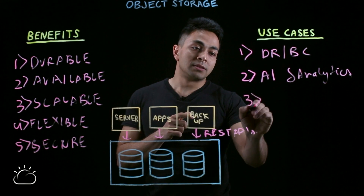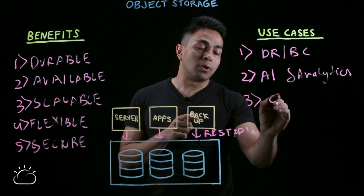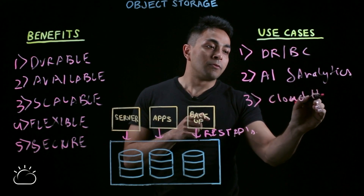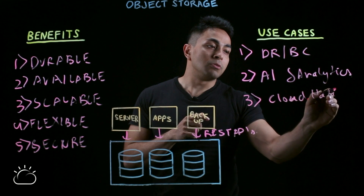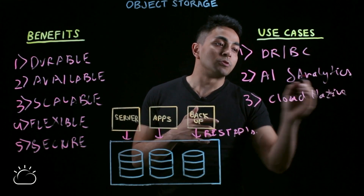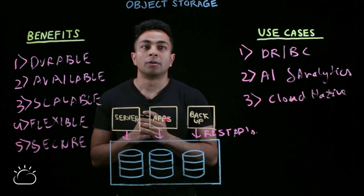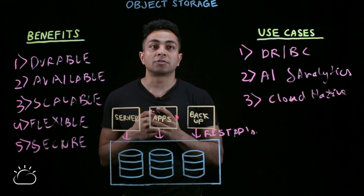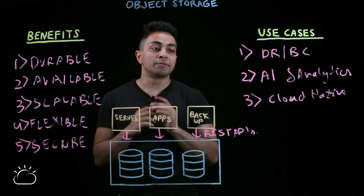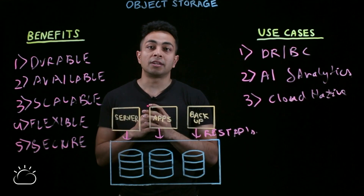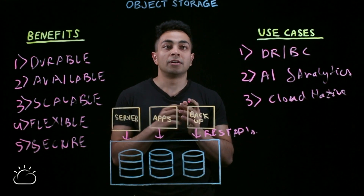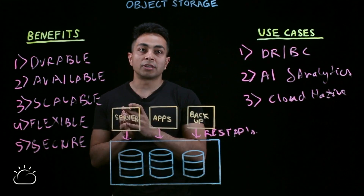The third use case is cloud native. For example, you may be trying to build a new startup that wants to build an iOS or Android app. Object store gives you the flexibility to easily store the data requirements that you have, giving you both cost effectiveness and flexibility.